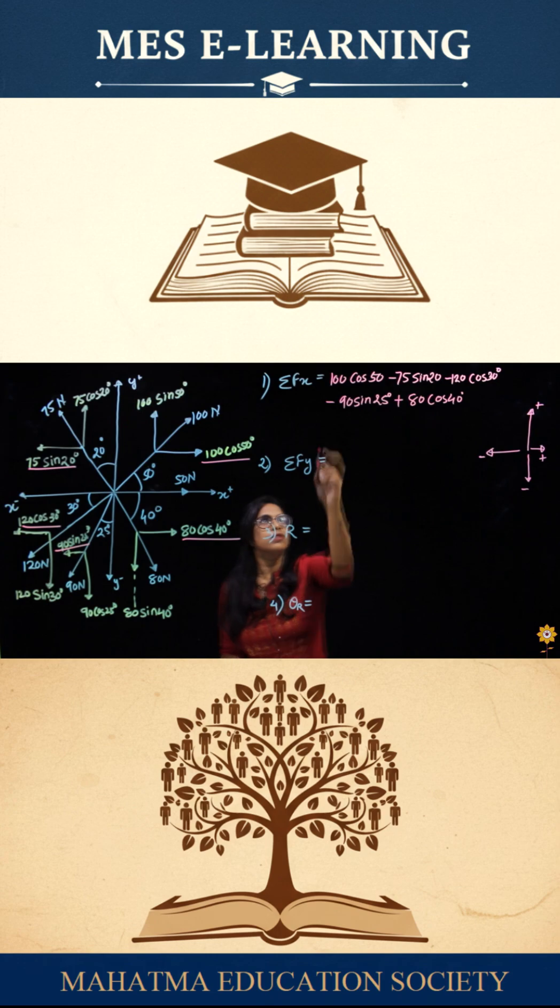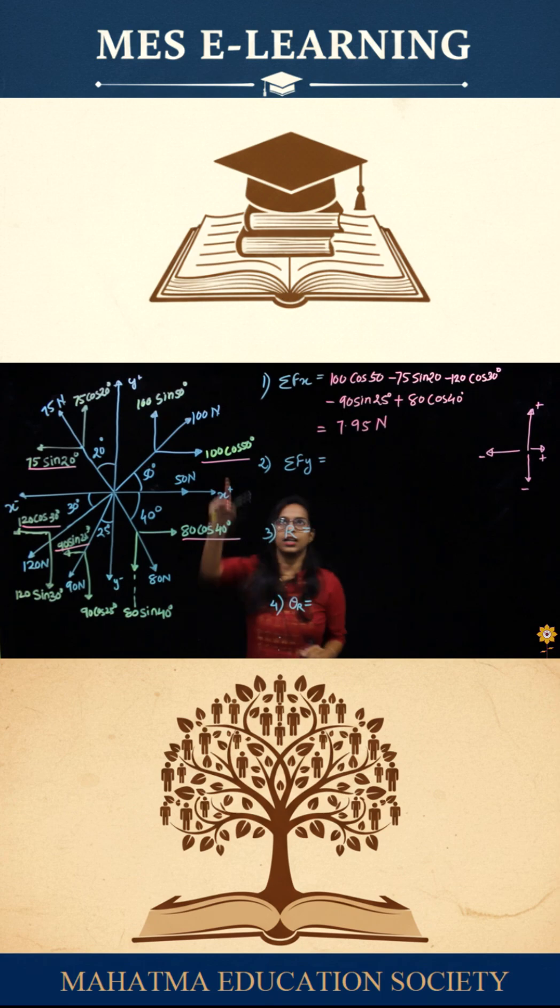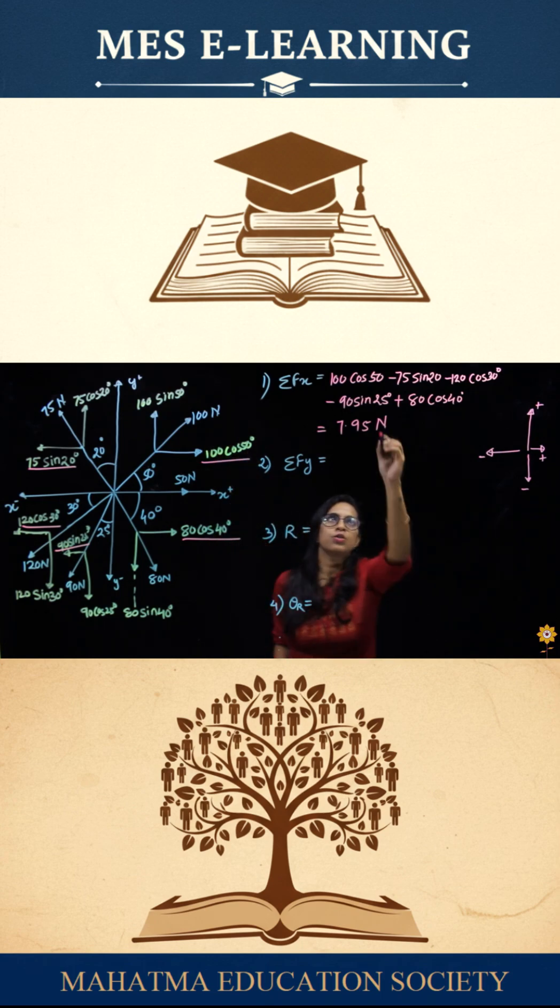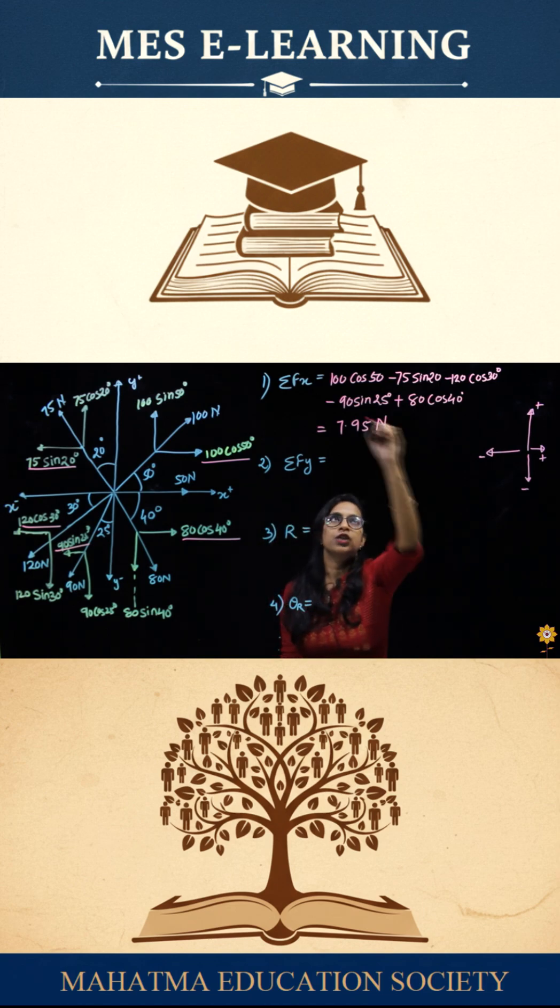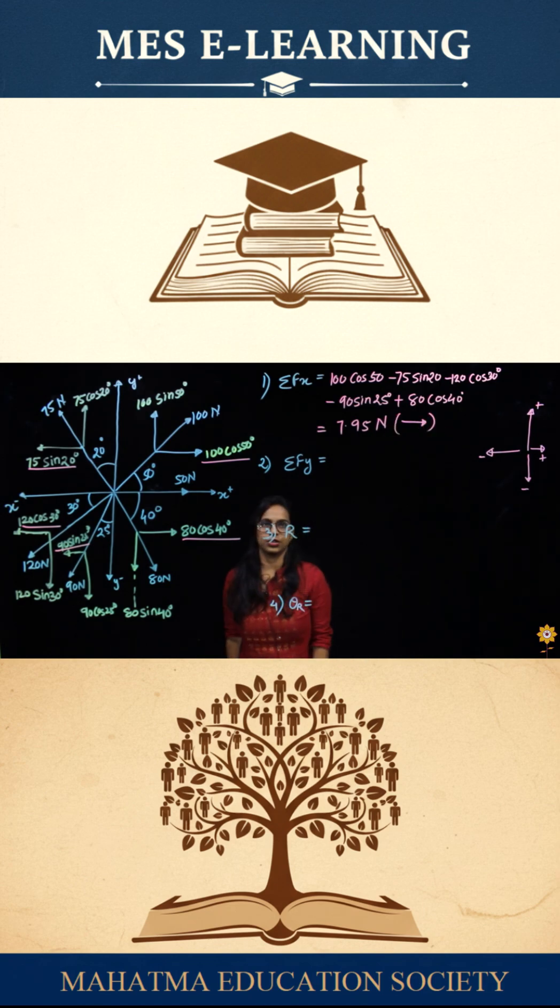So if you calculate, the answer would be 7.95 newtons. Now the value, if you see, is positive. So the direction of f of x forces would be in the forward direction.